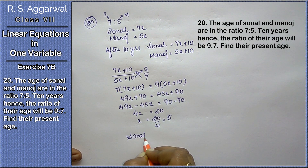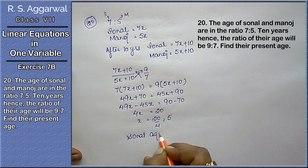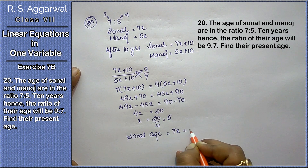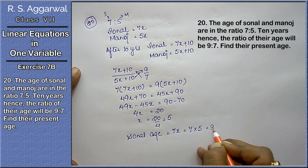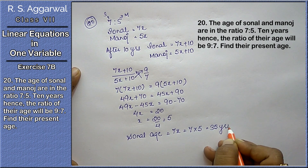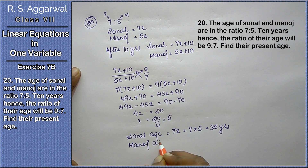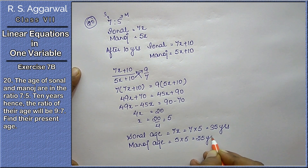So x equals 20 upon 4, that is 5. Now we find the present ages. The present age of Sonal is 7x, that means 7 times 5, which is 35 years. And Manoj's age will be 5 times 5, that is 25 years.